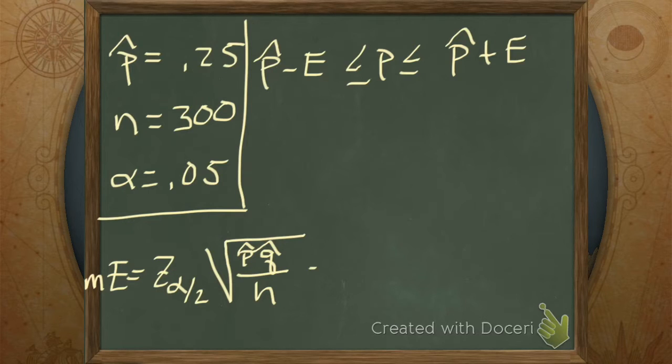Let's go get those. So z alpha over 2 is a critical value. What's z alpha over 2 for a 95% confidence interval? It is 1.96 and you can do that by finding a critical value. So that's 1.96 and then that's times p hat, which is 0.25.